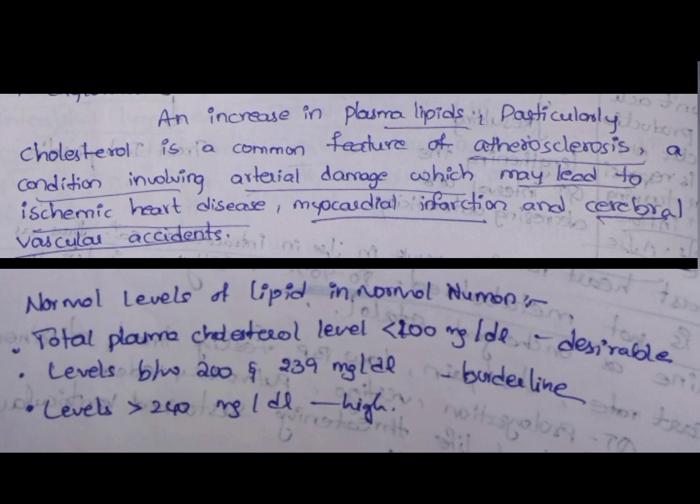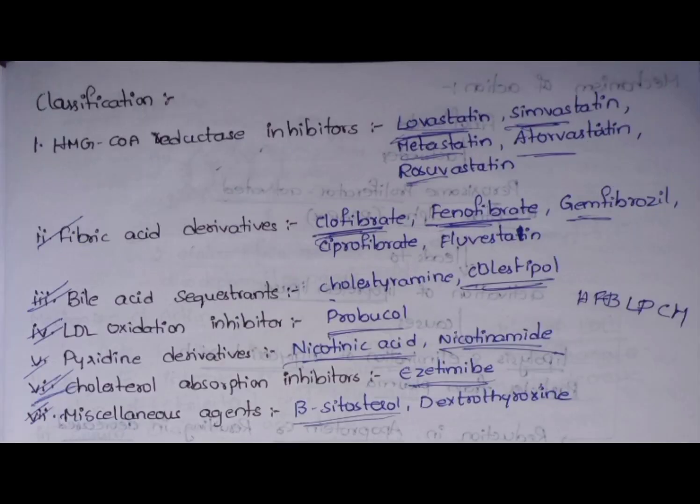Next, coming to the classification of anti-hyperlipidemic drugs — it is divided into seven types: HMG-CoA reductase inhibitors, fibric acid derivatives, bile acid sequestrants, LDL oxidation inhibitors, pyrimidine derivatives, cholesterol absorption inhibitors, and miscellaneous agents.